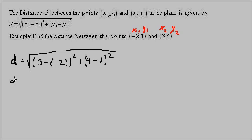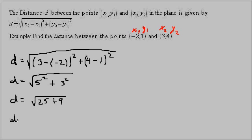So we have d equals 3 minus negative 2 is 5, so that's 5 squared, plus 4 minus 1, which is 3, so that's 3 squared. d equals the square root of 25 plus 9, and d equals the square root of 34. There's our answer.